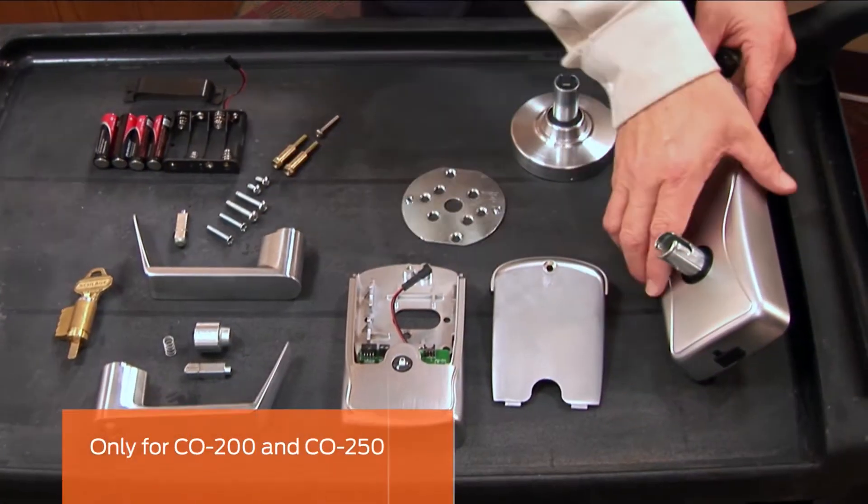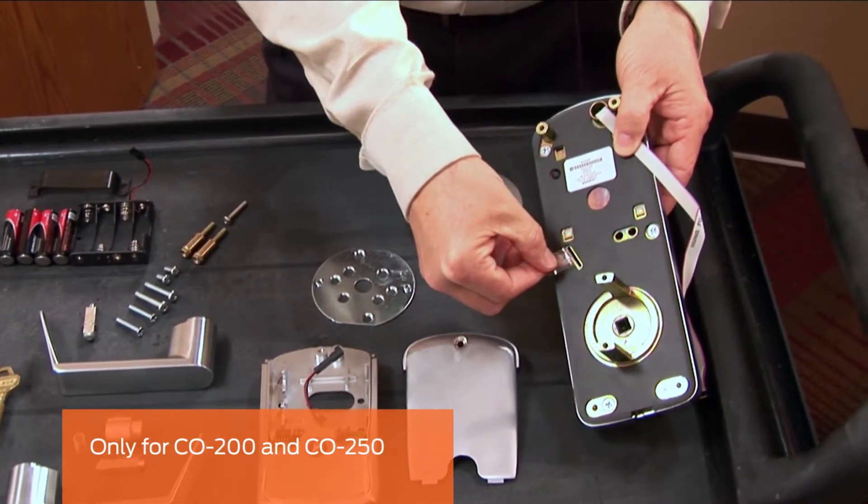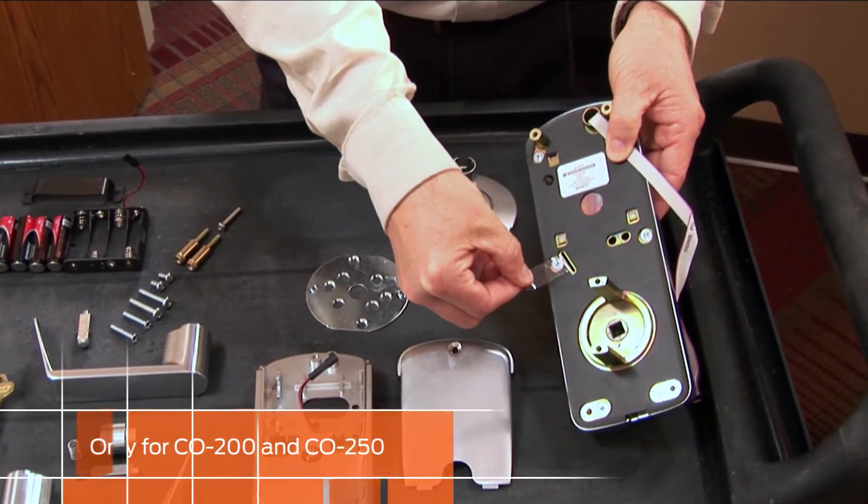This step is only for the CO 200 and CO 250. On the outside assembly, carefully remove the mylar strip.